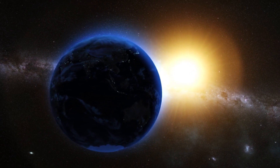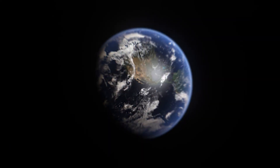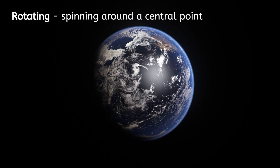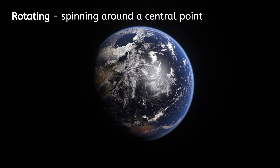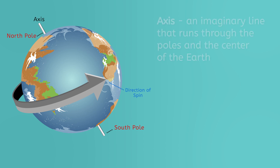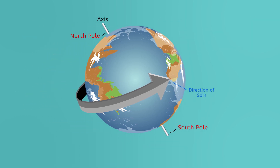To answer what causes seasons, we need to zoom in a little closer to Earth. In addition to revolving around the Sun, the Earth is also rotating, or spinning around a central point. The Earth rotates on its axis, which is like an imaginary line that runs through the poles and the center of the Earth. However, as you can see, the Earth's axis isn't exactly straight up and down. Instead, it's tilted to the side.